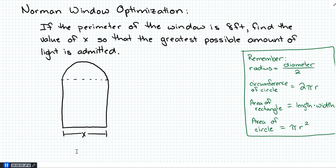We are going to optimize a Norman window — brace yourself, there is a lot of algebra in this. The problem says: if the perimeter of the window is 8 feet, find the value of X — where X is the width of the base — so that the greatest possible amount of light is admitted. What they're asking us to do is optimize the area; they want us to maximize area.